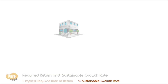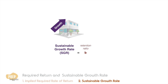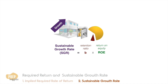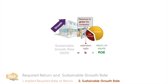We've talked so much about growth rate for dividend discount models, but how do we estimate a reasonable growth rate for a company? One simple way is to calculate the firm's sustainable growth rate, which is a simple function of the earnings retention ratio and the return on equity. The retention ratio is the proportion of earnings that the company retains to grow the company, so if we multiply that by the ROE, this gives us the rate at which earnings can continue to grow indefinitely.